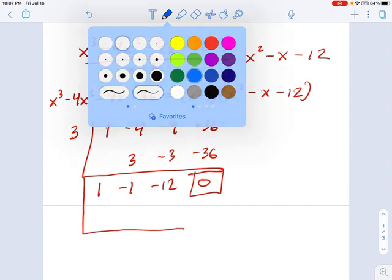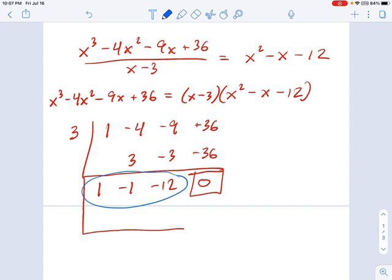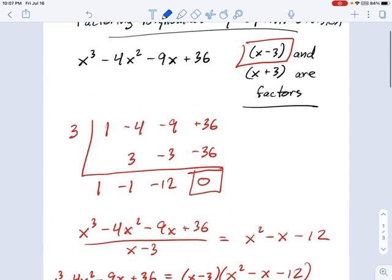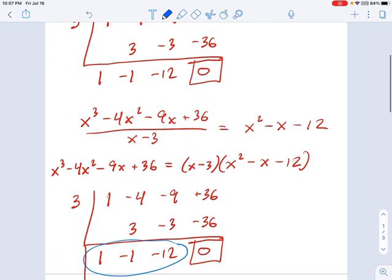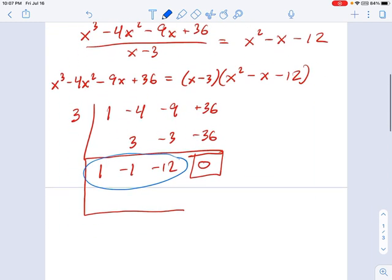And we have a new quotient. See this guy? This is my new quotient. I'm going to now try to pull out that other factor. Remember x plus 3? I told you there were two factors. We're going to use x plus 3 now as a factor. And I'm going to pull that out.